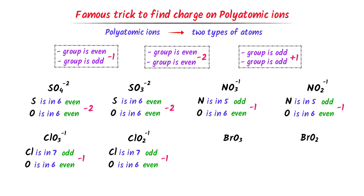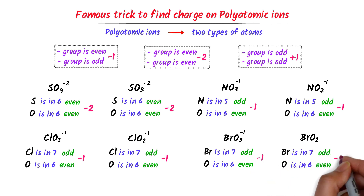In the case of bromate ion, bromine is in the 7th group and oxygen is in the 6th group. Seven is an odd number and 6 is an even number, so the charge must be negative 1. Hence, the charge on bromate ion is negative 1. Similarly, bromite ion contains the same atoms — bromine and oxygen — so the charge on bromite ion is also negative 1. Note down all these examples.